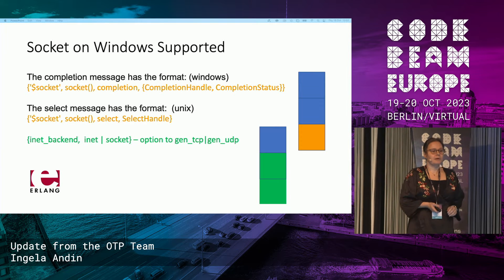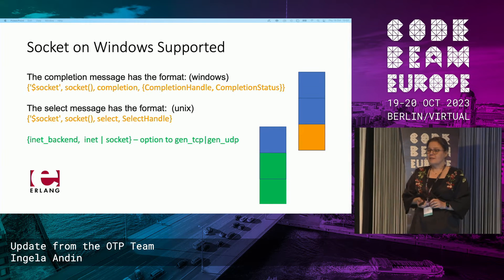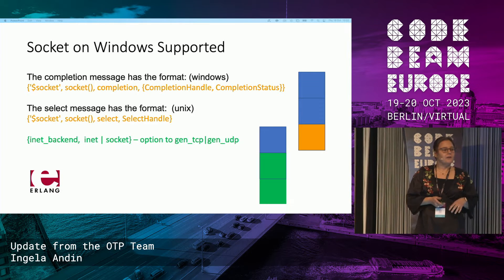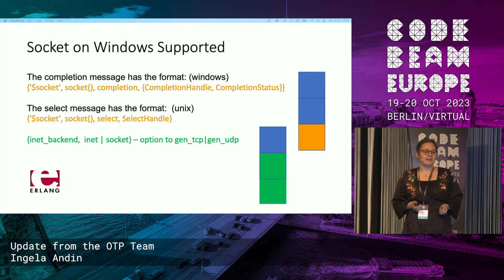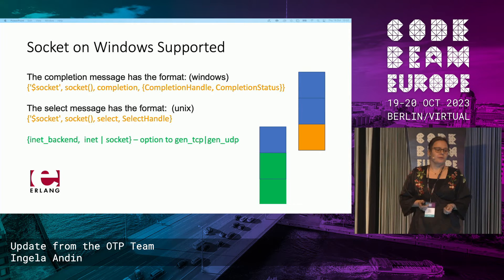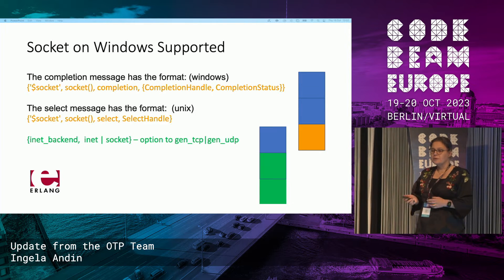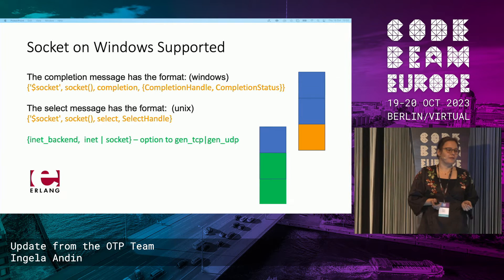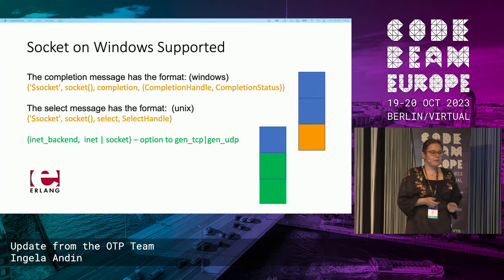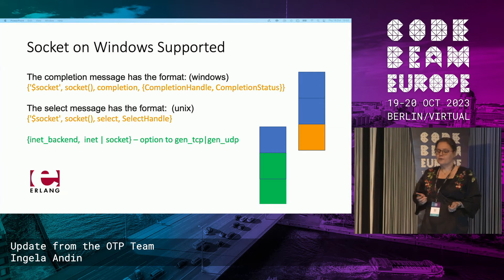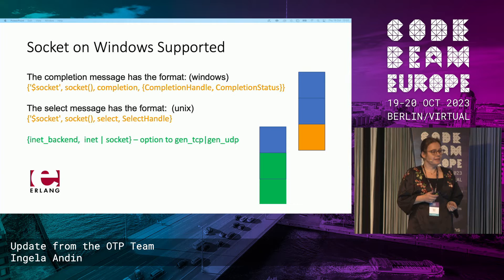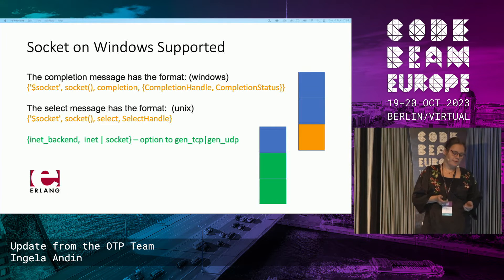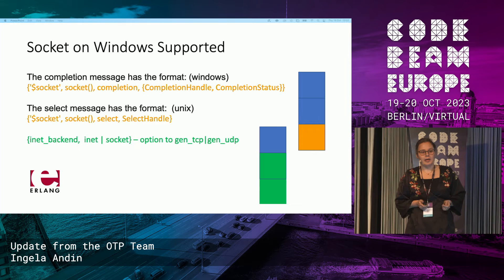When it comes to our low-level socket API, it is now supported on Windows, which is an important step on our long-term goal to phase out the inet driver. Most of you will not want to use this directly because it adds complexity and is not platform-independent. You will probably want to use it through our behaviors, gen-tcp and gen-udp, by providing the option inet backend and setting it to socket.